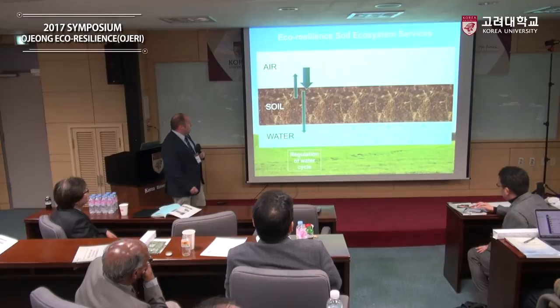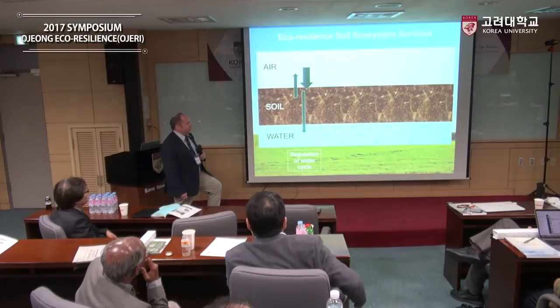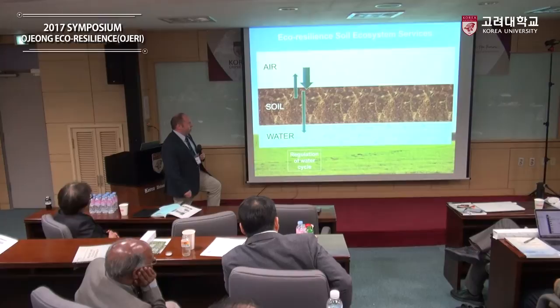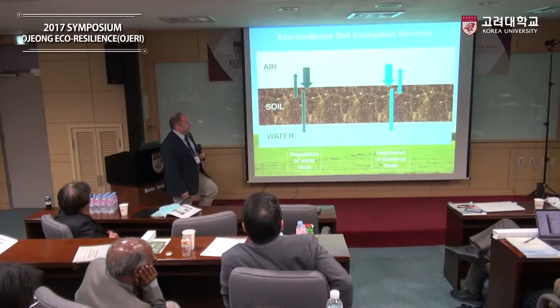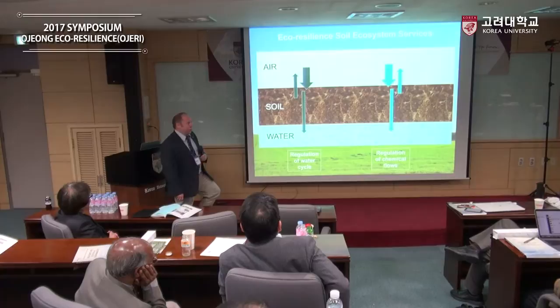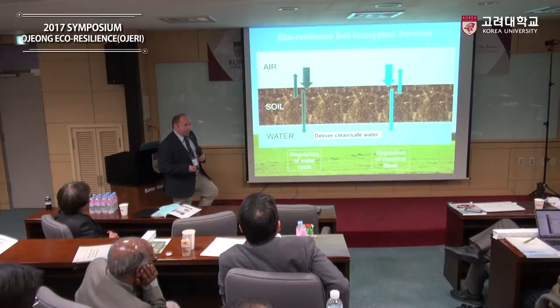The first important thing is how soil and char within a soil system has the potential to influence the hydrological cycle — to regulate water flows through the soil, changing porosity and the availability and movement of that water. The other thing relevant to this afternoon's talk is how char and soils regulate the flow of chemicals. Together, both of those provide us with clean water — an ecosystem service that soil provides naturally, and I'm interested in how we might augment that with char or smart char.